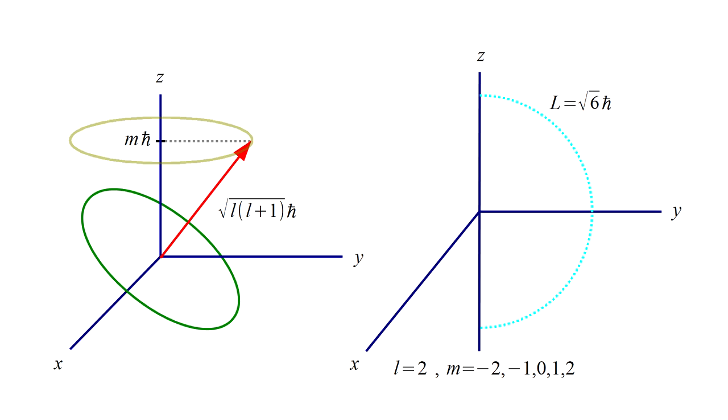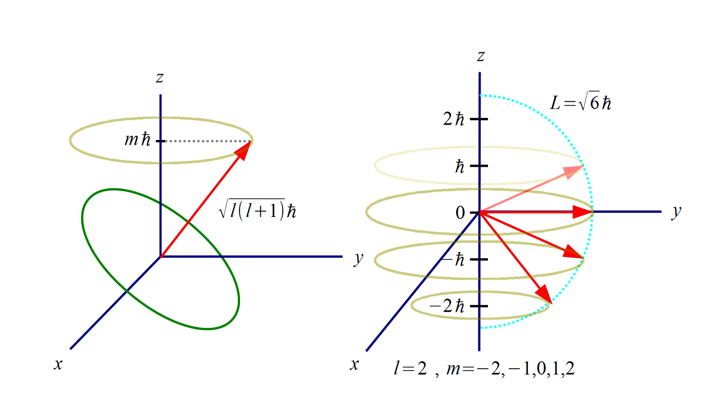We know that the length of the angular momentum vector is the square root of 2 times 3, which is the square root of 6, times h-bar. The Z-component is one of the five values shown. Say M is minus 2. Then the angular momentum vector could be anywhere on the brown circle. If M is minus 1, it could be anywhere on this next brown circle, and so on for all five values of M.